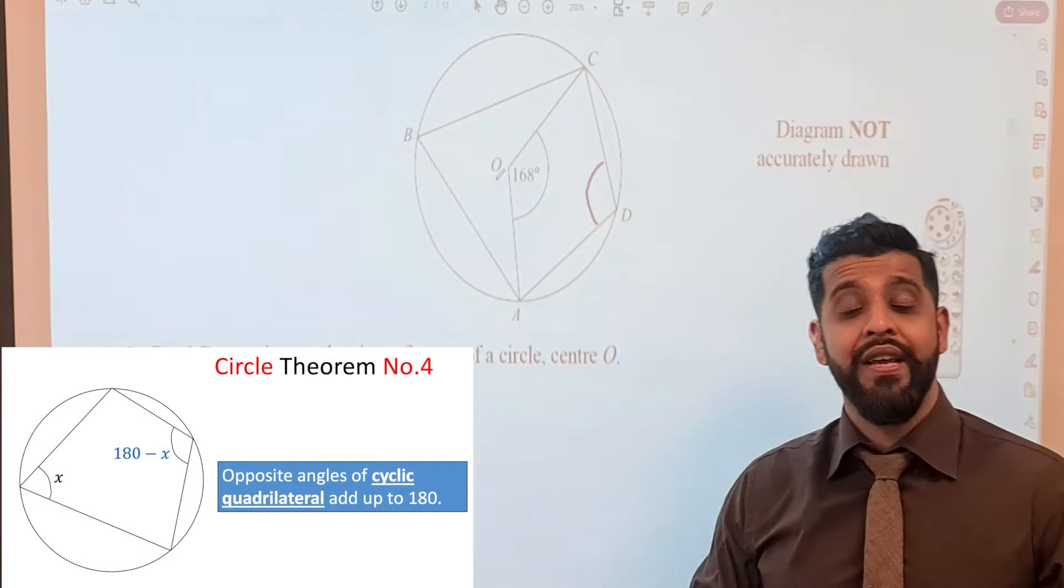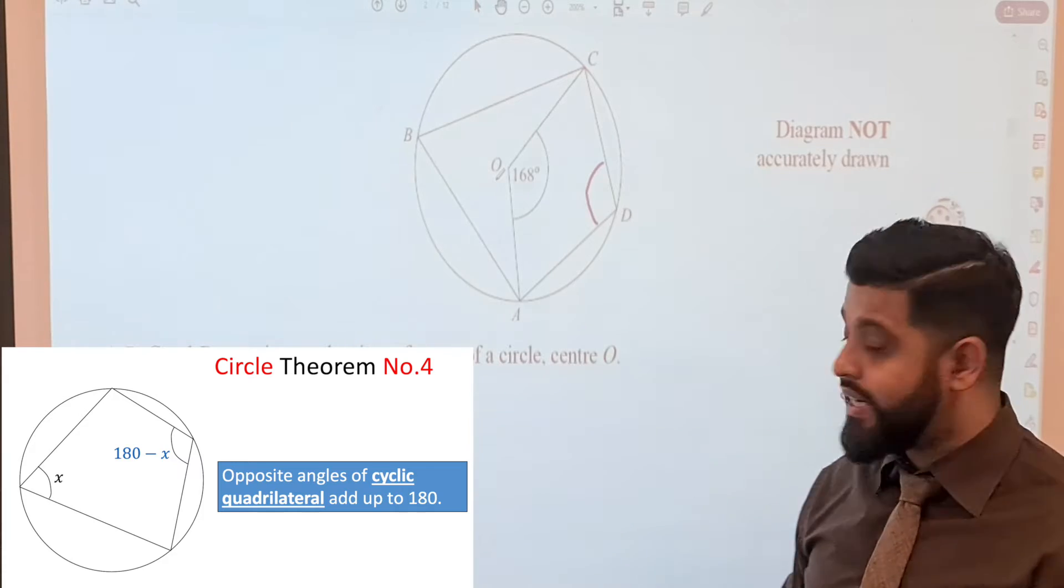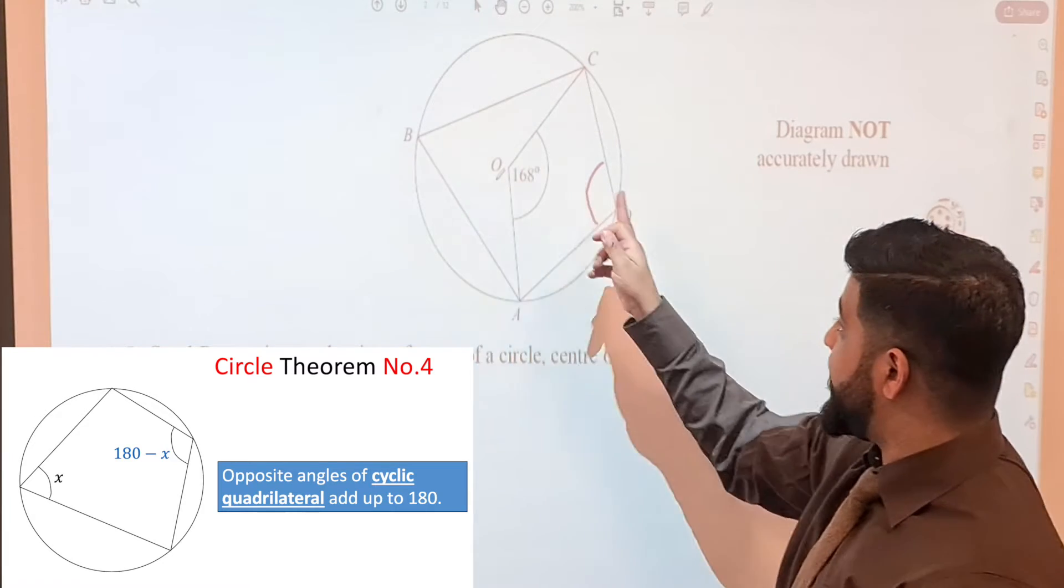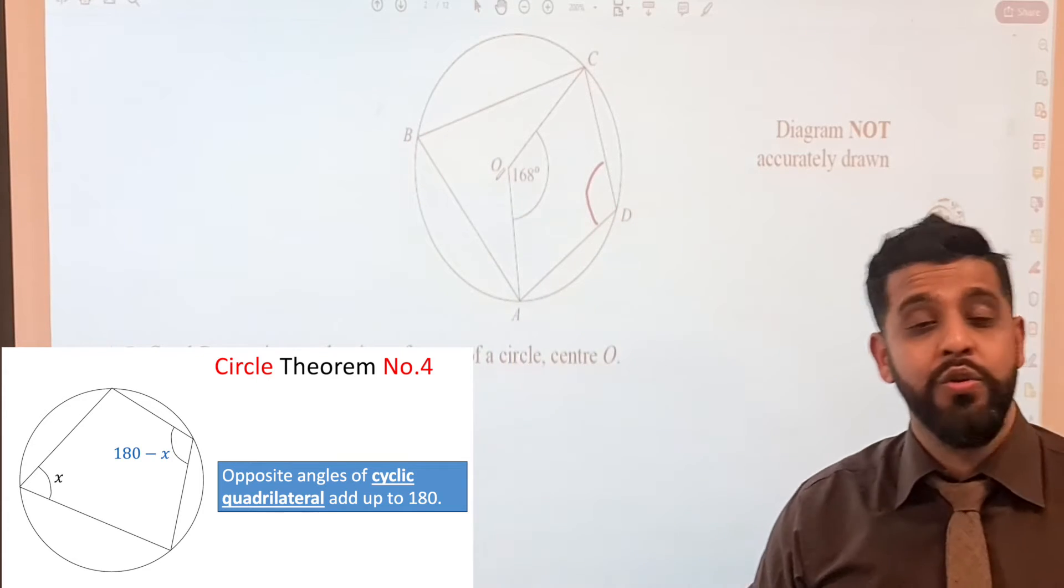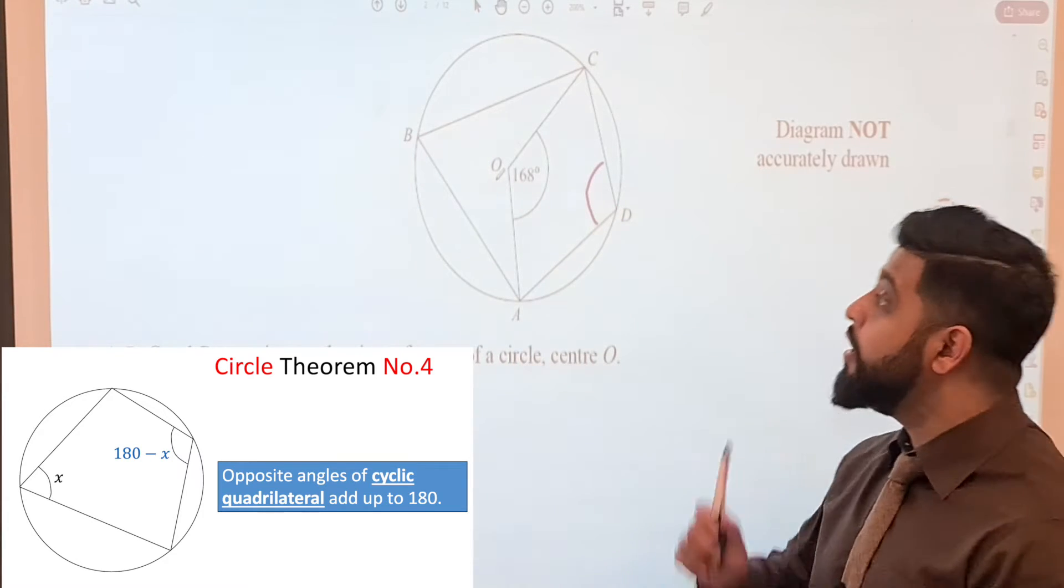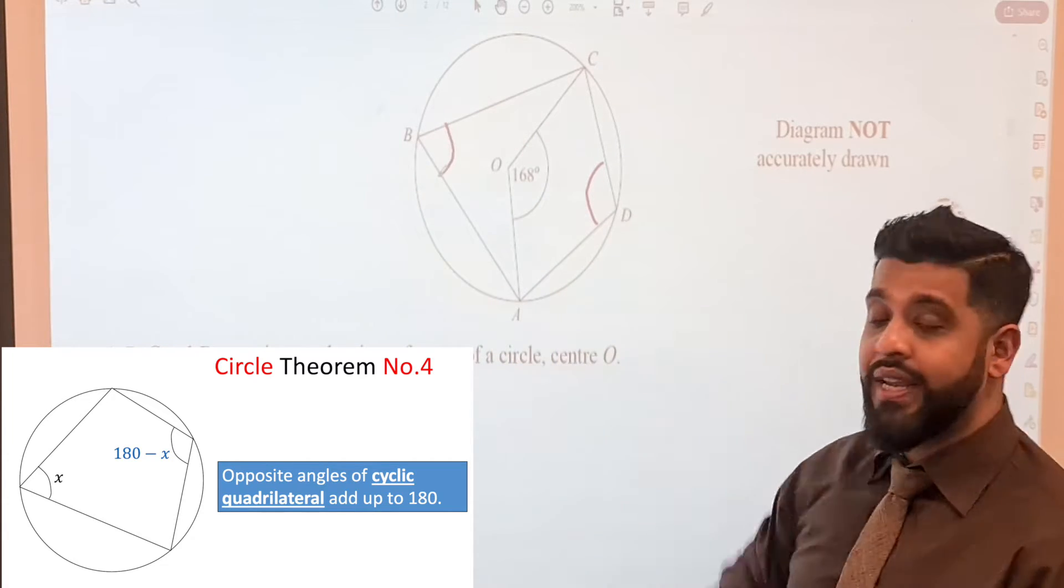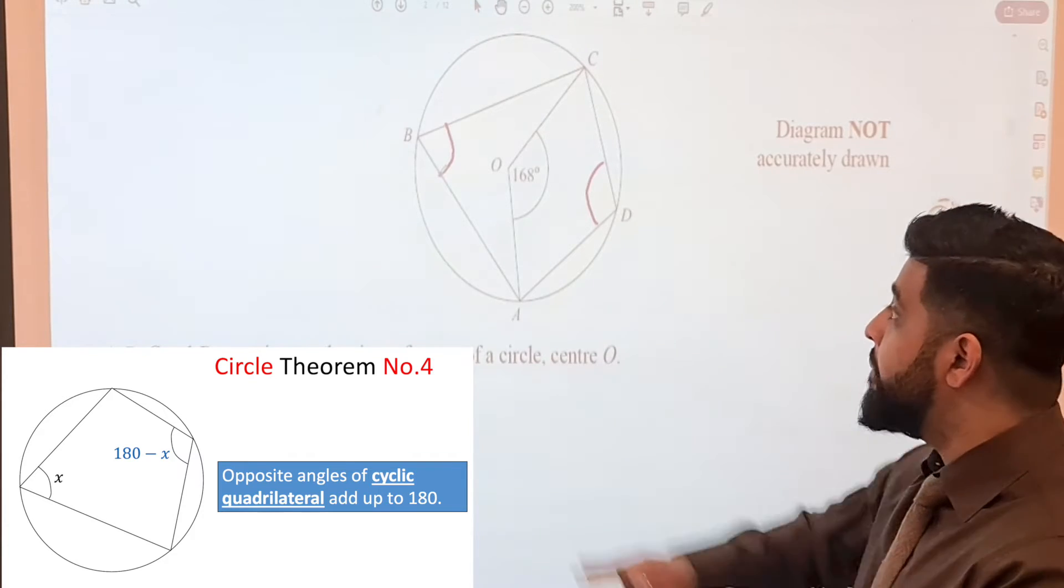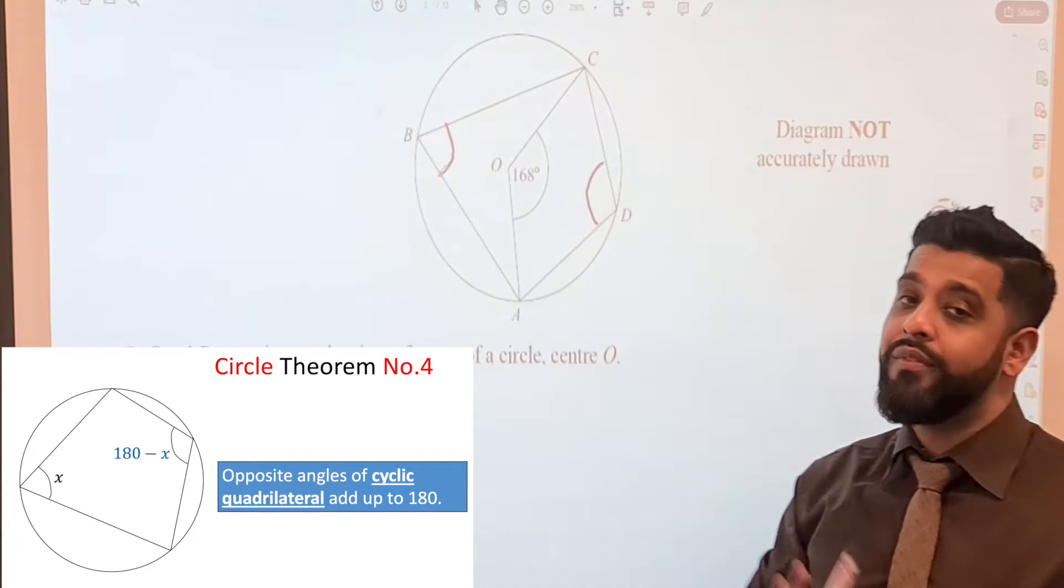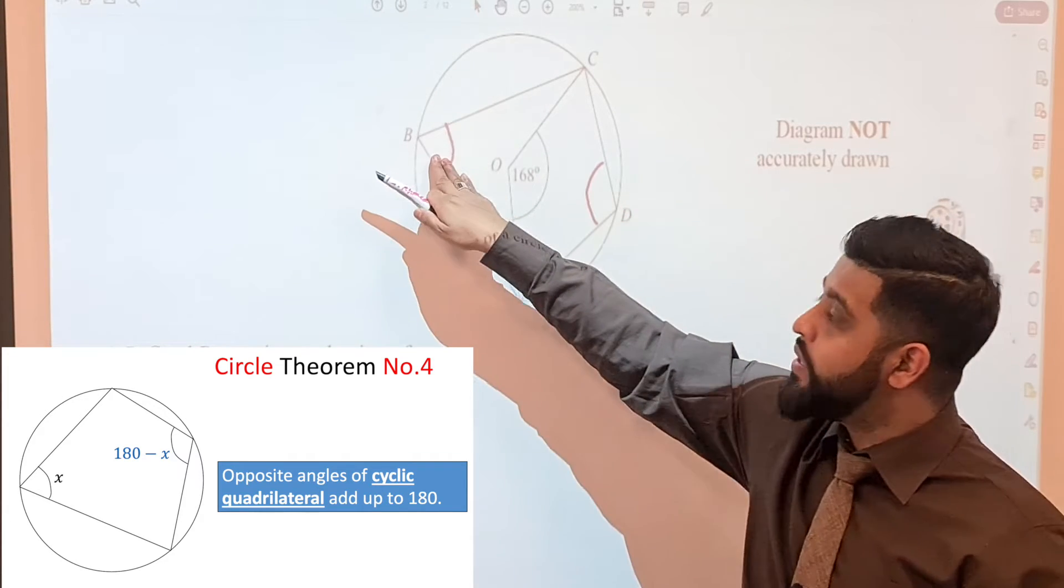Straight away I can see that we have a cyclic quadrilateral and what do we know about cyclic quadrilaterals? We know that the opposite angles are equal to 180 degrees. So this angle right here and this angle right here, they will be equal to 180 degrees. But we don't know these two angles. Obviously we can't find this one straight away but maybe we can find this.